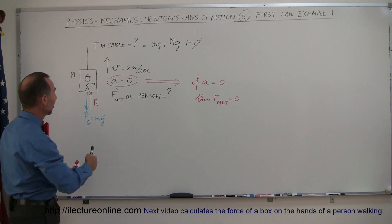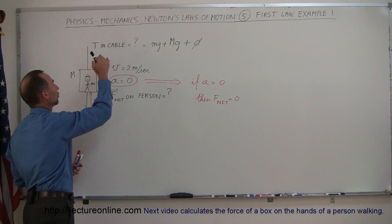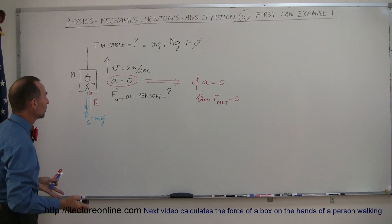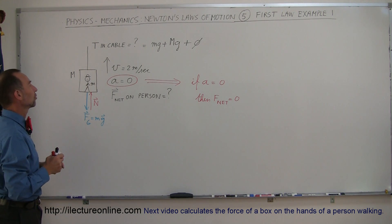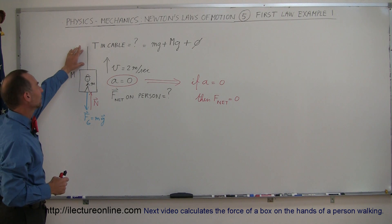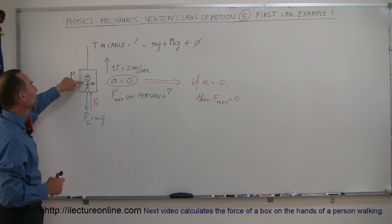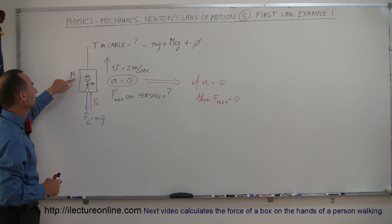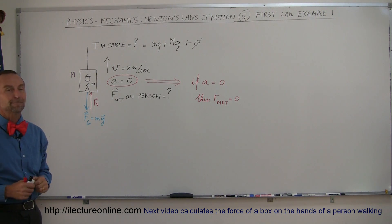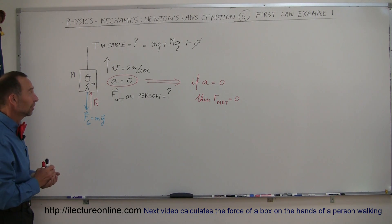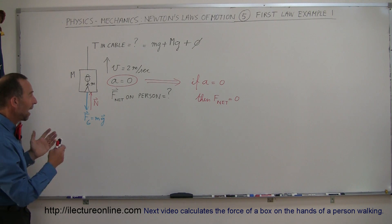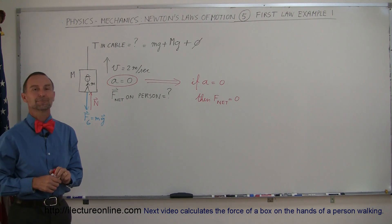Newton's first law says that once the car and the person are moving upward at 2 meters per second, no force is required to continue moving upward at that speed. So the only tension required in the cable is simply to hold up the weight of the person and the weight of the car against gravity. And that's how you use Newton's first law to analyze a problem like this.